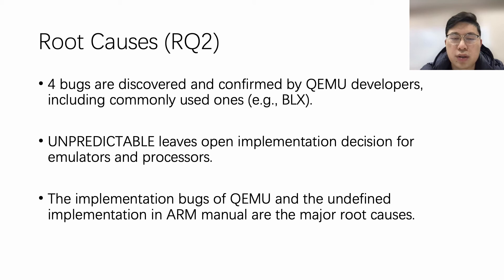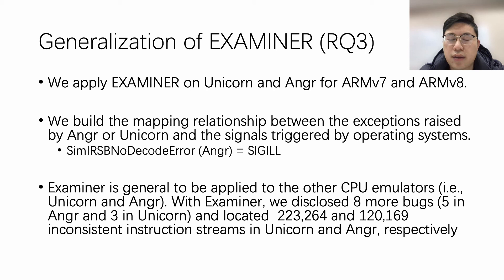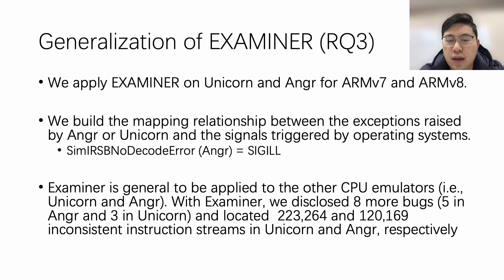To further demonstrate that Examiner is general, we applied it to two other lightweight but popular CPU emulators, Unicorn and Angr. As Unicorn and Angr do not provide options to specify ARMv5 and ARMv6 architecture, we only evaluated ARMv7 and ARMv8. Furthermore, both Unicorn and Angr do not support signals, so we built a mapping relationship between exceptions raised by Angr or Unicorn and signals triggered by operating systems. For example, the SIMIRSB node decode error raised by Angr maps to the SIGILL signal. We found that Examiner is general and applicable to other CPU emulators, disclosing eight more bugs and locating a large number of inconsistent instruction streams in Unicorn and Angr.